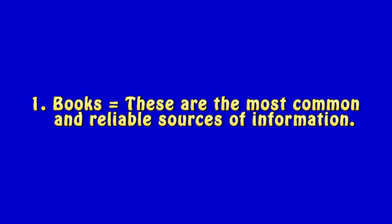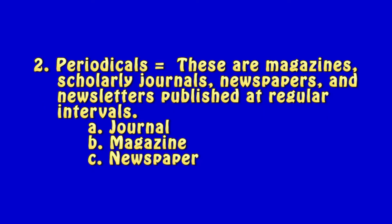Last time, we discussed what a bibliography is, and also the types or formats of sources of information — print and online. In part 1 of Writing Bibliography, we discussed print sources: books, which are the most common and reliable sources of information, and periodicals, which include journals, magazines, and newspapers. Now let's discuss online sources.